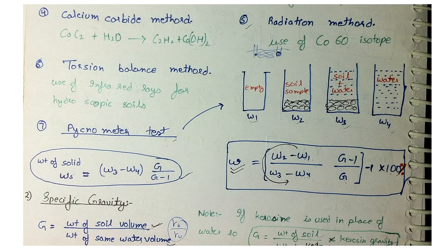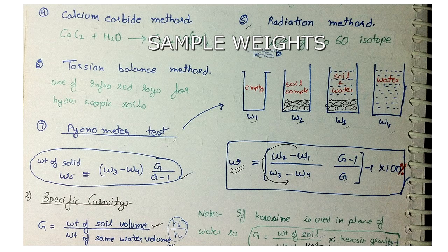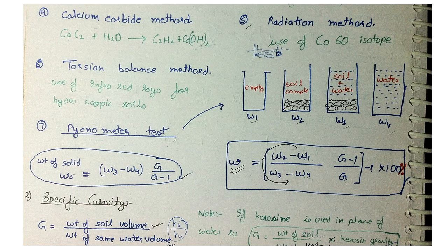Next is the pycnometer test, which uses four weight measurements: W1 for empty container weight, W2 for the container with soil sample, W3 for the container with soil plus water fully submerged, and W4 for the container with only water. Water content is calculated as (W2 minus W1) divided by (W3 minus W4), expressed as a percentage, going anti-clockwise in order W1, W2, W3, W4.